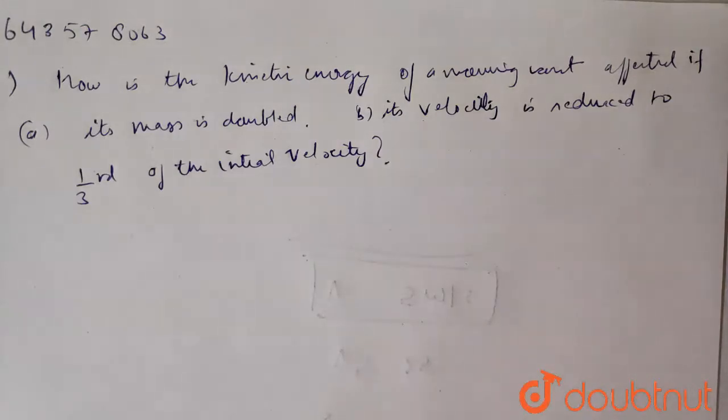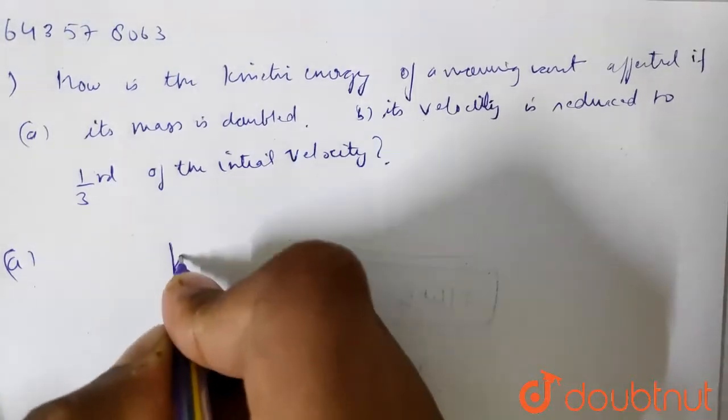Part A: Its mass is doubled. Part B: Its velocity is reduced to one third of the initial velocity. So first of all we know kinetic energy...